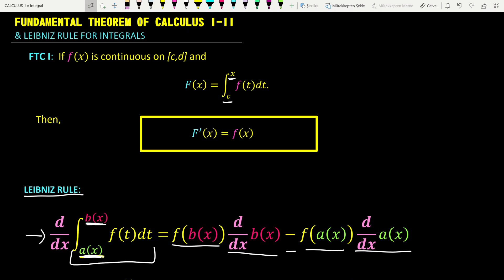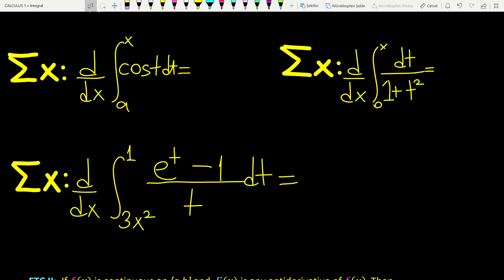Now let's solve some problems for fundamental theorem of calculus part one and Leibniz rule. In the first example, the boundaries of the integral go from a constant a to the variable x, so we can directly apply the theorem. The answer is cosine x — we find the derivative of that integral without computing it. Of course, if you calculate the integral first and then take the derivative with respect to x, you will also find cosine x.